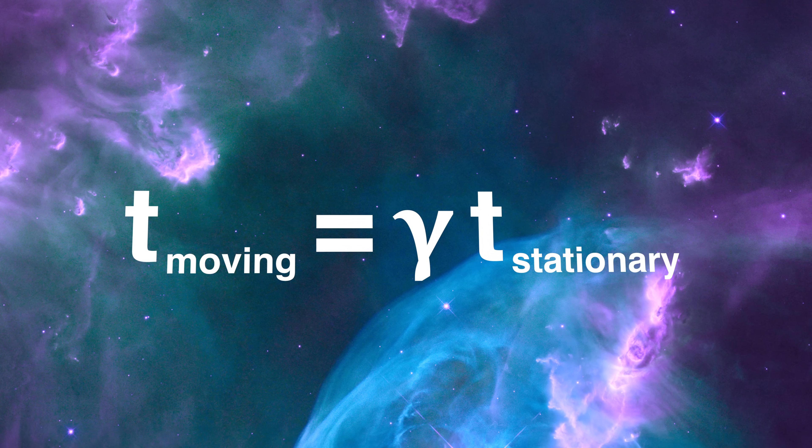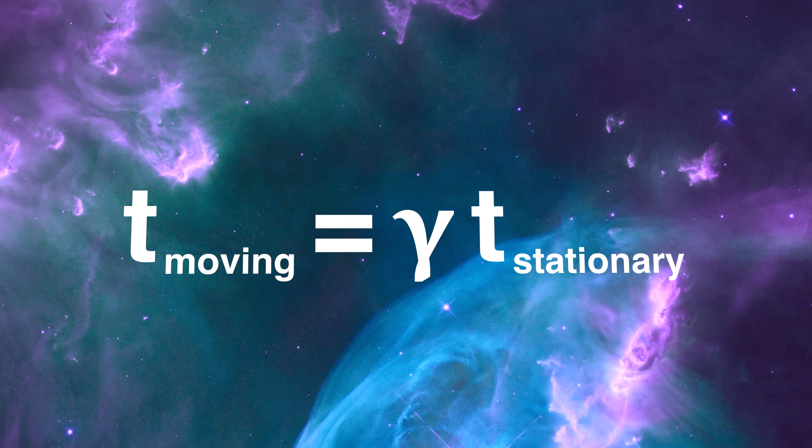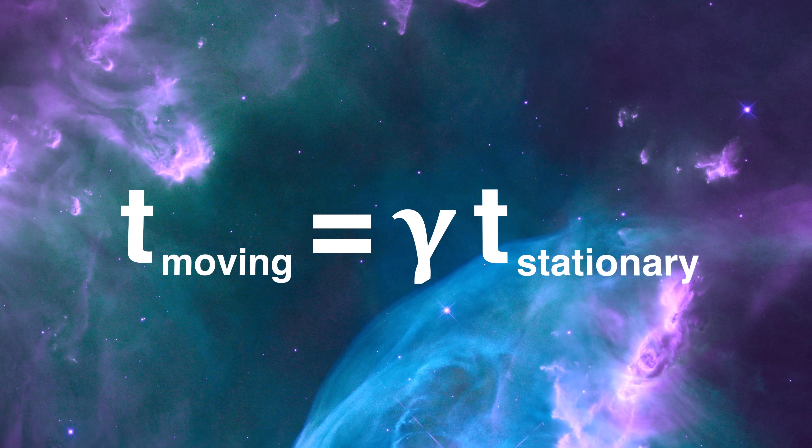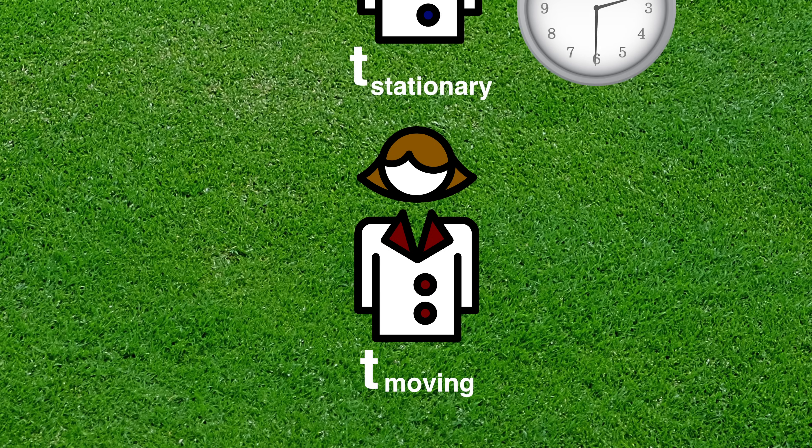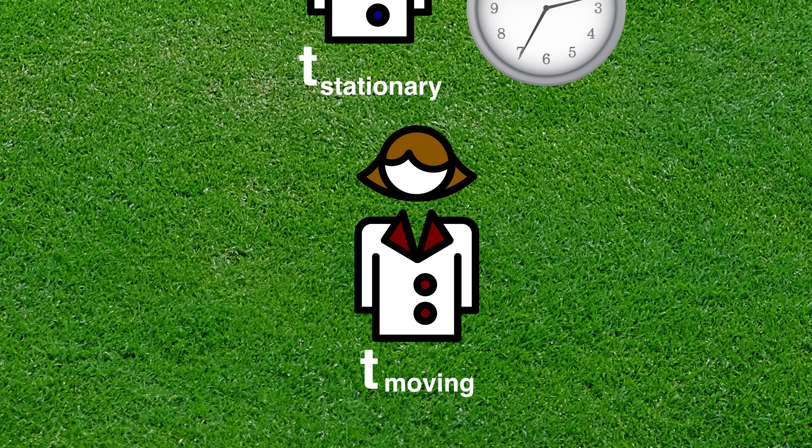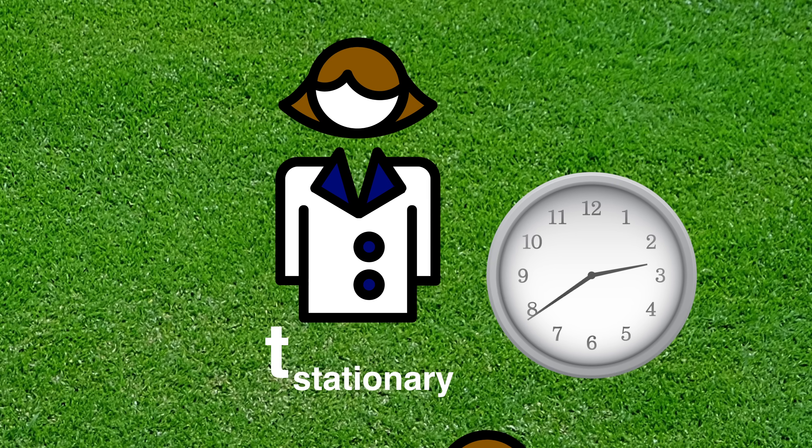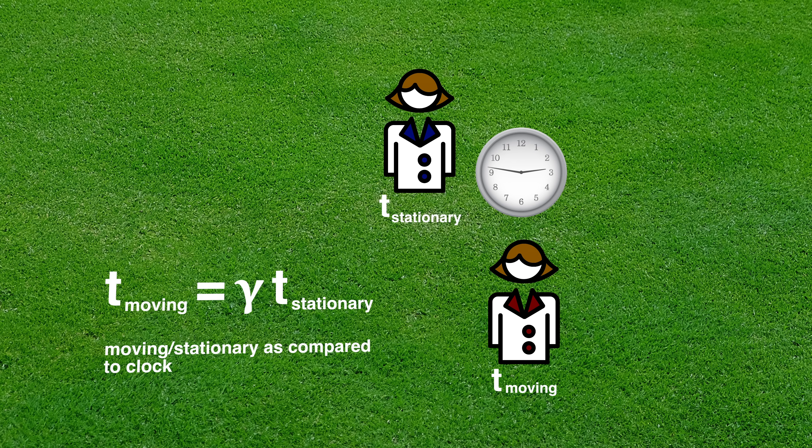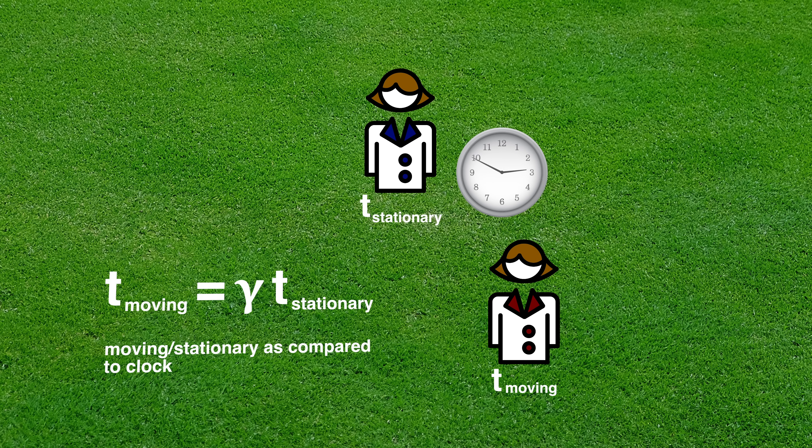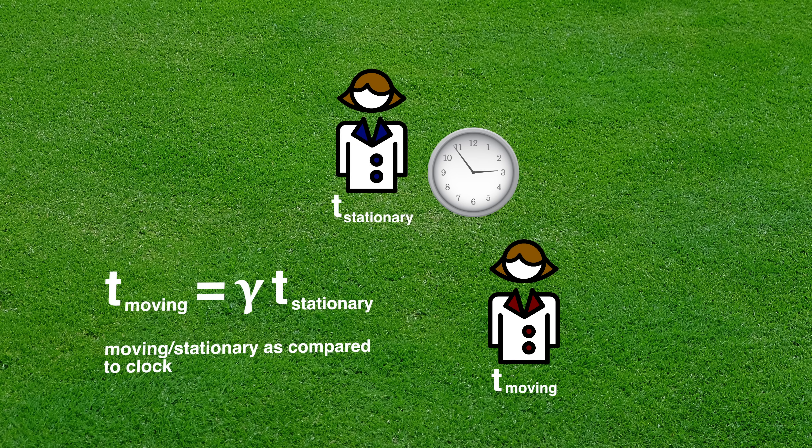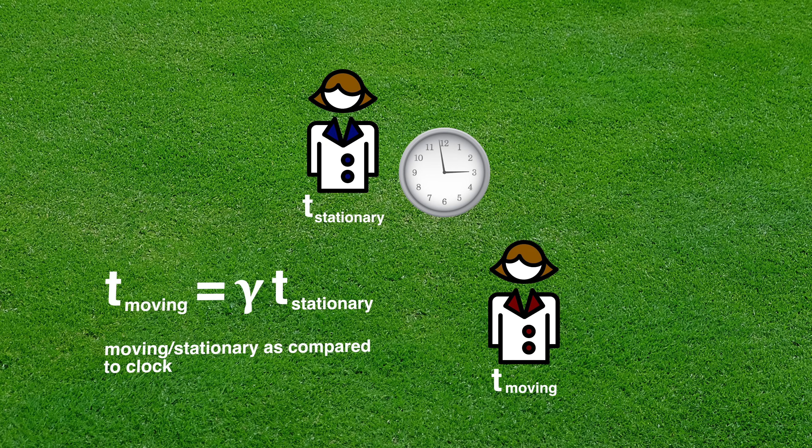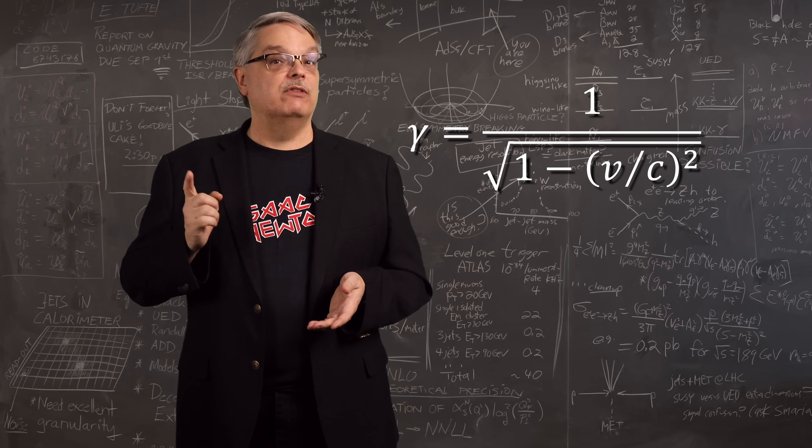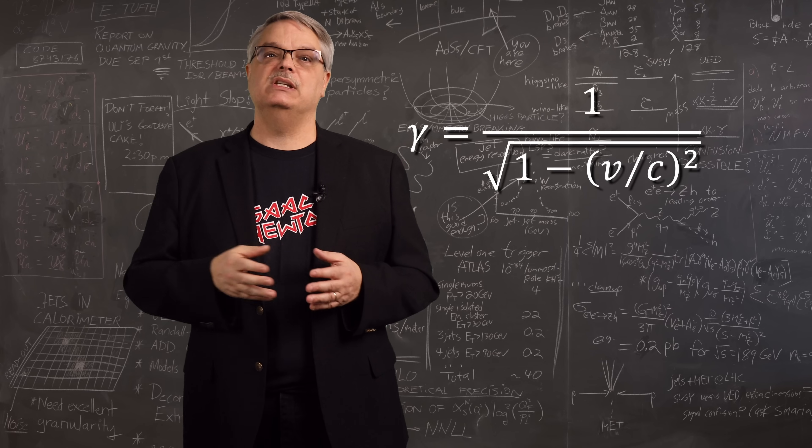So let's start with the most common time dilation equation you'll find in a relativity textbook. It is T sub-moving equals gamma times T sub-stationary. T sub-moving is the time experienced by someone who sees the clock moving. T sub-stationary is someone who doesn't see the clock moving, and gamma is a factor unique to relativity called the Lorentz factor. It is equal to 1 for something not moving and greater than 1 when something is moving.